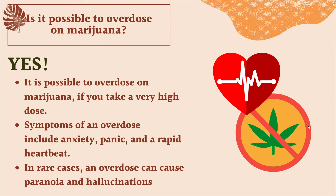Symptoms of a marijuana overdose include anxiety, panic, and a rapid heart rate — your heart beating out of your chest. Some people even have hallucinations and paranoia. If you think anyone is having those symptoms, make sure you call 911 right away or tell an adult. It's really important that the person gets medical attention because they may be having a marijuana overdose.